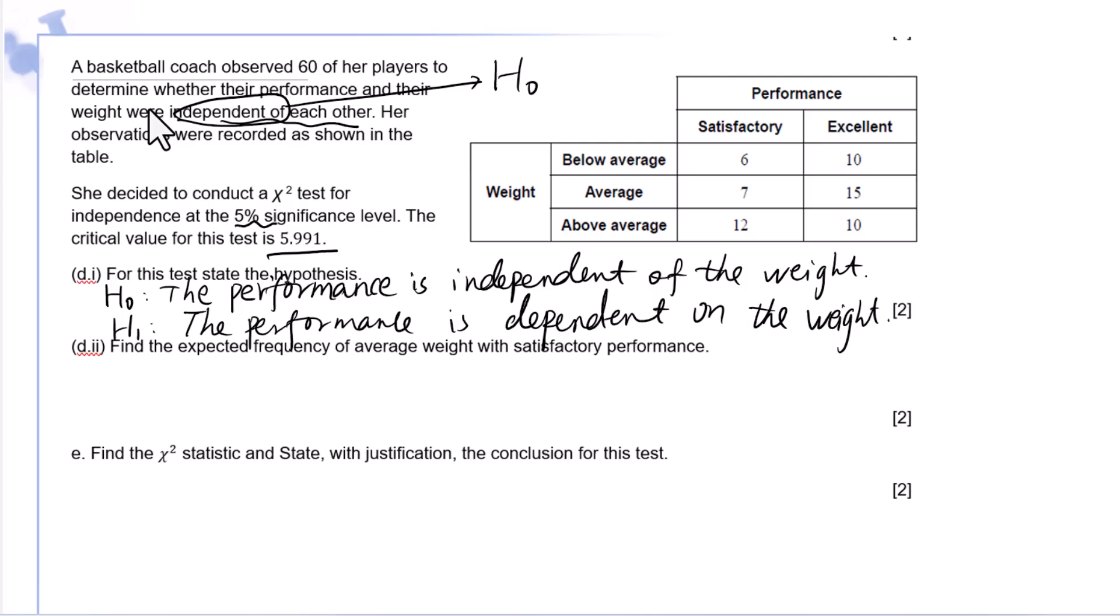D2. Find the expected frequency of average weight with satisfactory performance. This is 7. We need to figure out the total number for average weight, 22.